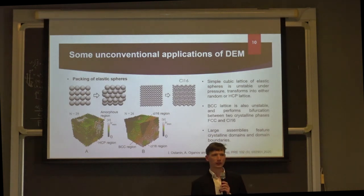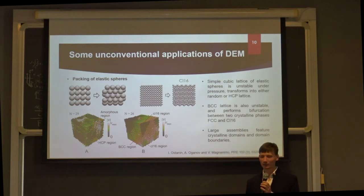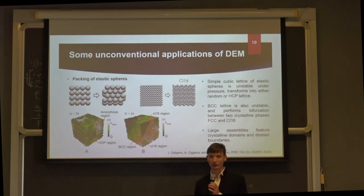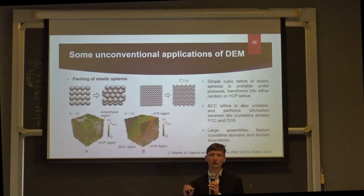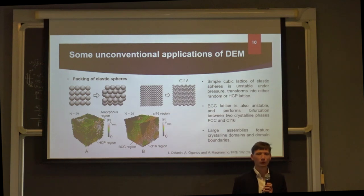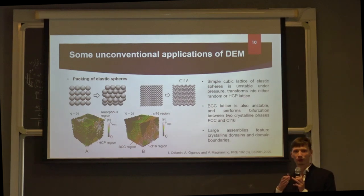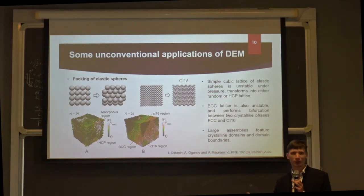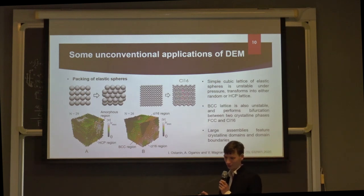I would like to give you some idea of what I call non-conventional applications of DEM. One of them: I tried to compress elastic spheres, basically in the context of some acoustic application. I found out that uniformly compressed elastic spheres in three dimensions exhibit unusually complex behavior. If you have spheres originally packed as a BCC lattice, they perform bifurcation — sometimes preferring to evolve to an FCC lattice via the so-called Bain path, and sometimes forming a so-called CI16 lattice. It really took a crystallographer to understand what I was observing in this DEM simulation.